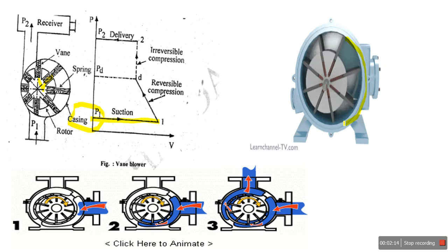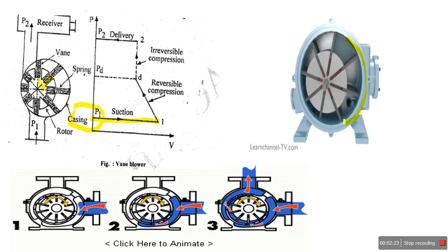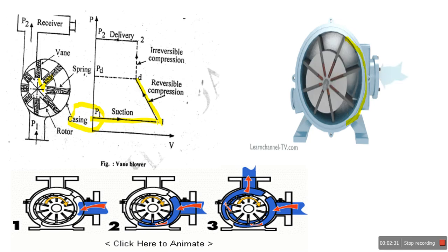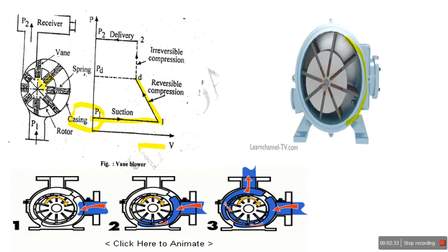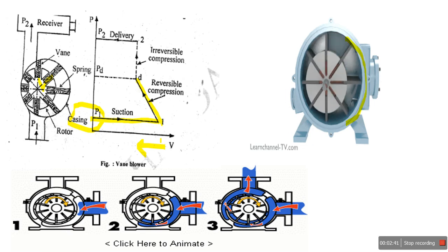As rotation proceeds, the trapped air is first compressed reversibly from condition 1 to D. With further movement of the rotor, reversible compression continues — that is, the volume is reduced. This is called positive displacement compression: reducing the volume.